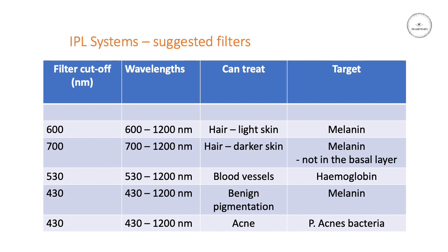430 is also a good filter to use for acne, because the blue light down that end of the spectrum will be strongly absorbed in the P. acnes bacteria. This generates some singlet oxygen, which is toxic to the bacteria and can kill it. You would then follow that up at a later stage with a 530 filter to target the blood vessels in the inflammation around the acne.